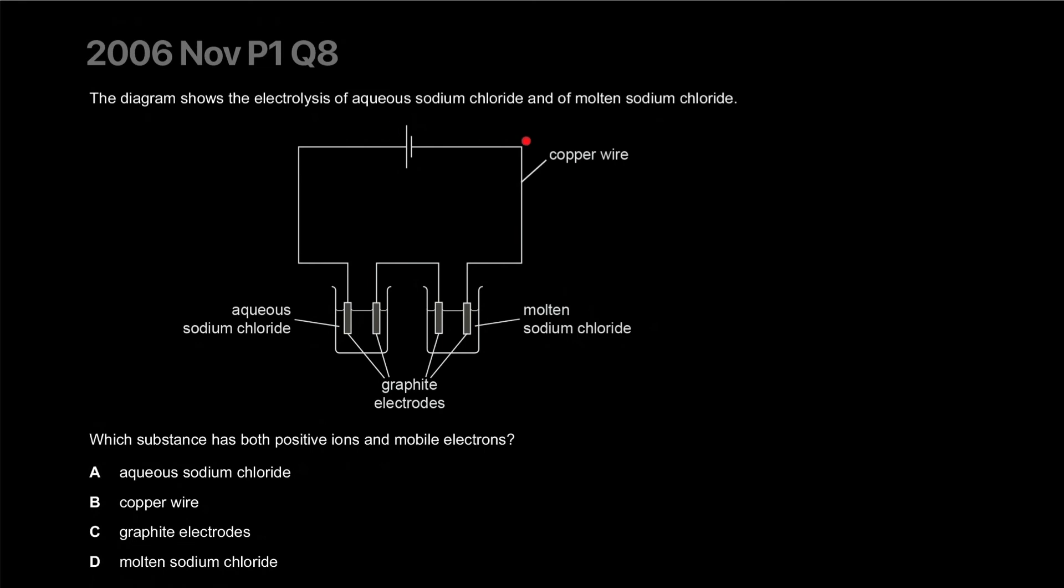The diagram shows electrolysis of sodium chloride and molten sodium chloride. Which substance has both positive ions and mobile electrons? Neither of them would have mobile electrons. Oh, copper wire. Aqueous sodium chloride would have free ions. Copper wire would have electrons. Molten sodium chloride would have ions only. And this would be electrons only. What kind of a question is this? Positive ions...